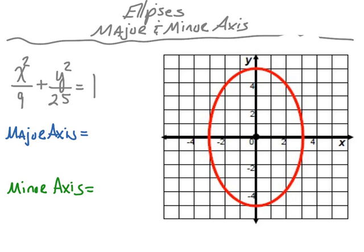We're going to start with the major axis — the longer of the two. In this case, the major axis runs vertically. We want to find the distance from the top to the bottom, so we count: 1, 2, 3, 4, 5, 6, 7, 8, 9, 10. The major axis is 10 units. Now for the minor axis — the shorter of the two — we count from one side to the other: 1, 2, 3, 4, 5, 6. The minor axis is 6 units.